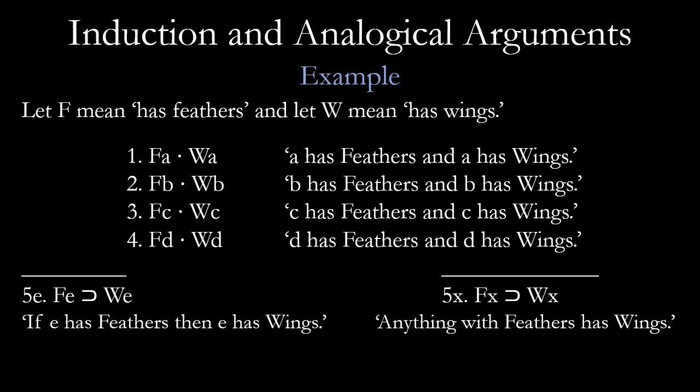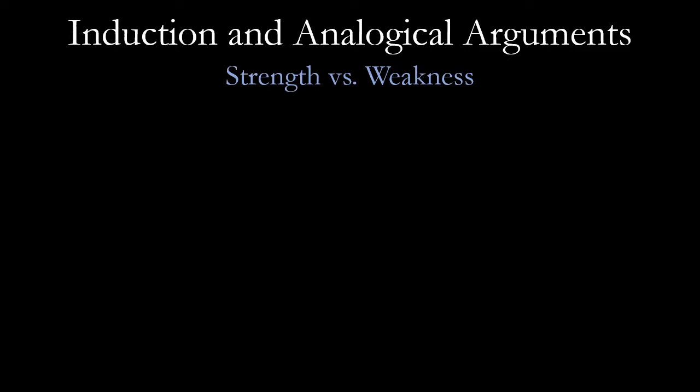We can use the analogical pathway, which will give us an instantiation of the next instance, or we can make a generalization that says everything with feathers has wings. In both cases, we want to stress that we're talking about probabilities — we don't know for sure. These are not deductive arguments where the conclusion necessarily follows. They are inductive arguments where the conclusion probably follows, and there are different degrees of strength.